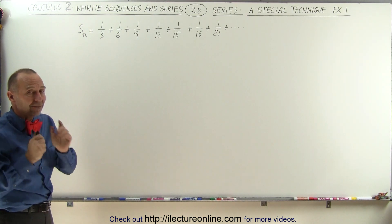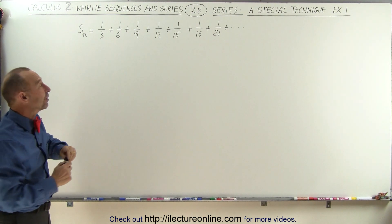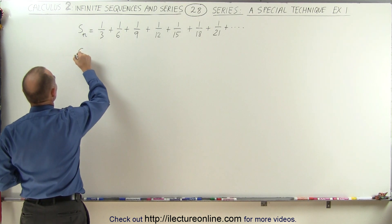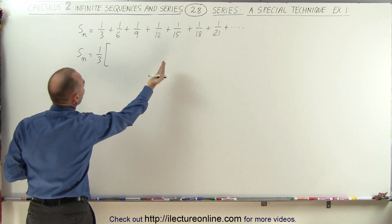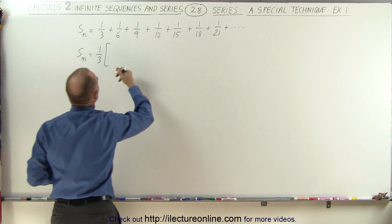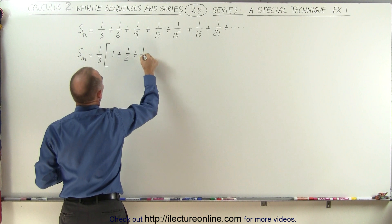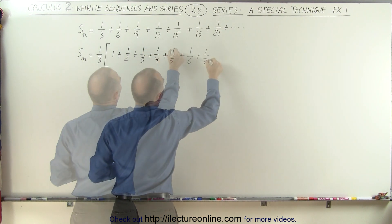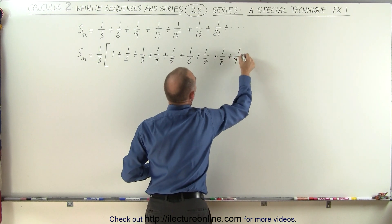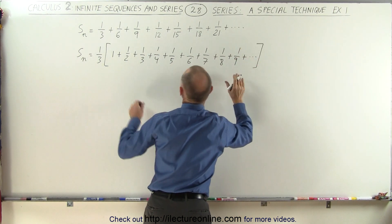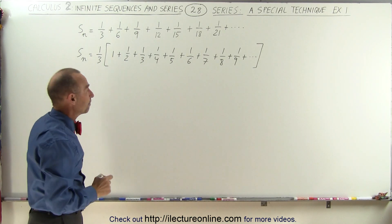But actually it doesn't converge, because when we rewrite it you'll see something very interesting. We can say that the summation S sub n is equal to one-third times — we're factoring out one-third — which gives us 1 plus one-half plus one-third plus 1 over 7, 1 over 8, 1 over 9, and so forth. This is beginning to look very similar to what we saw in the previous example. Matter of fact, it's exactly the same.